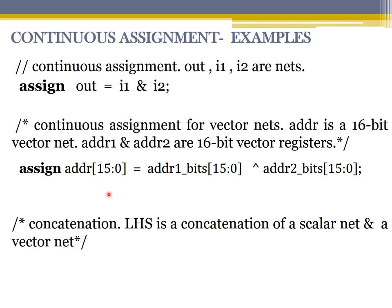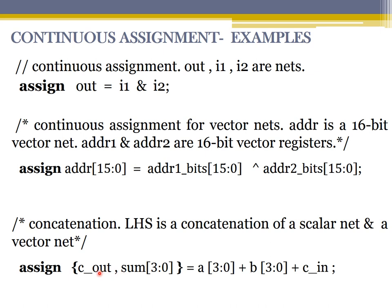One more characteristic: the LHS can be a concatenation of scalar and vector nets. For example, assuming Cout and Sum are wires: Sum[3:0] is a 4-bit variable and Cout is a single-bit variable. Using the curly braces concatenation operator, we make it a 5-bit LHS. So we write: assign {Cout, Sum[3:0]} = 4-bits of a + 4-bits of b + carry-in input.